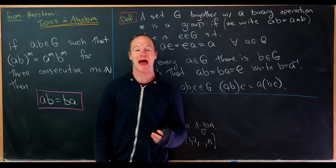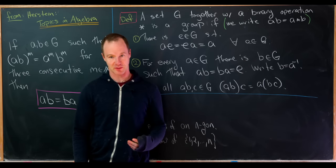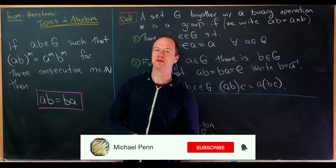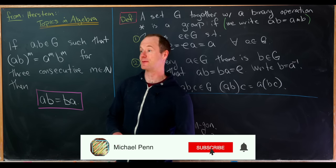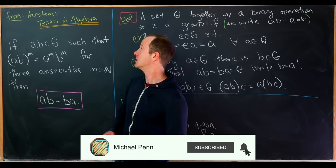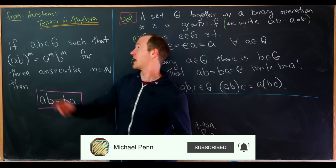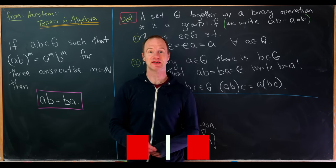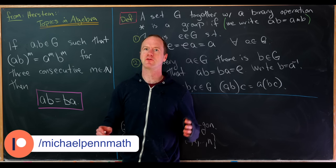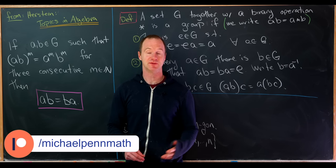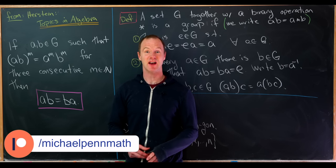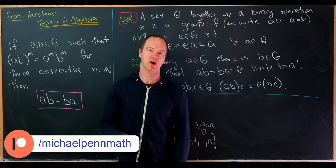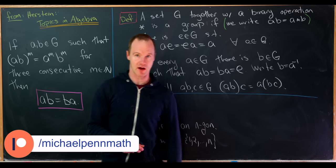Today we're going to look at a nice abstract algebra problem from one of the most famous textbooks for abstract algebra. It's written by Herstein and it's called Topics in Algebra. It's been around for a long time, so I think you could find a used copy pretty cheap online if you look around.